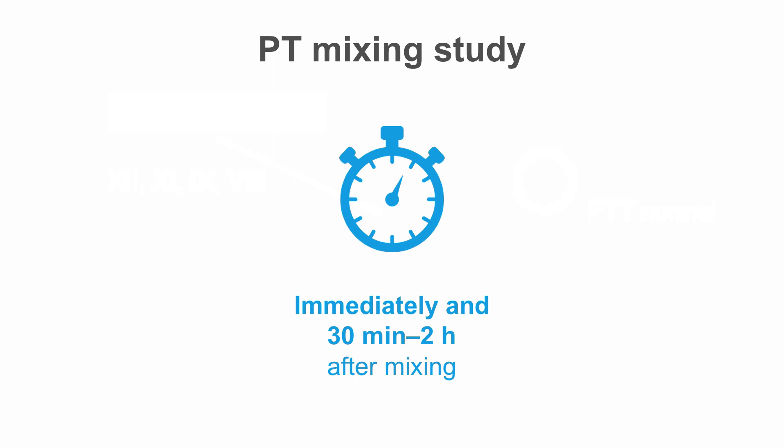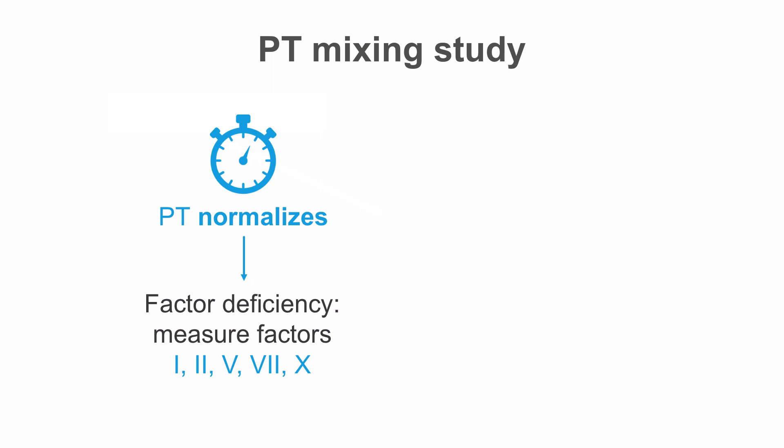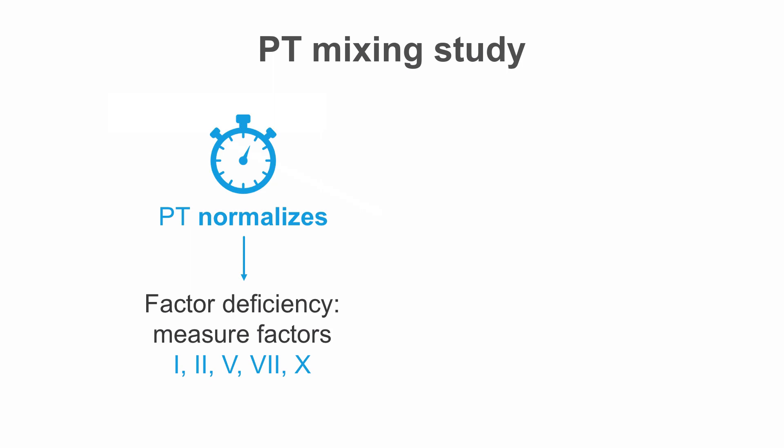Once immediately and the second time 30 minutes to 2 hours after mixing. If the PT normalizes, we are dealing with a factor deficiency and the involved factors may be factors 1, 2, 5, 7, and 10. If the PT does not normalize, then most likely we are dealing with an inhibitor, and the most common inhibitor involving the pathway for PT is a factor 5 inhibitor.